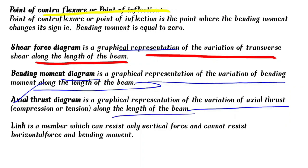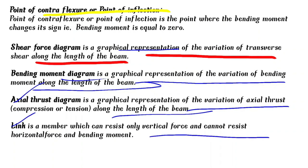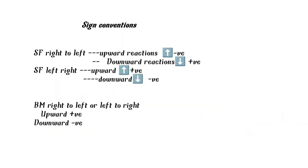A link is a member which can resist only vertical force and cannot resist horizontal force and bending moment. This is called a link. Next, sign conventions.